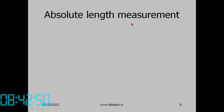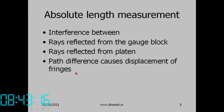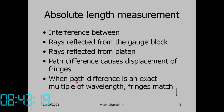How can we measure absolute length using this interferometer? The interference between rays reflected from the gauge block and rays reflected from the platen — path difference causes displacement of fringes. When the path difference is an exact multiple of wavelengths, the fringes will be matched; for other path differences, the fringes will be shifted.